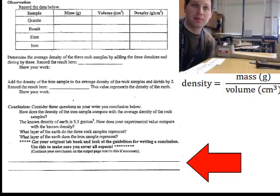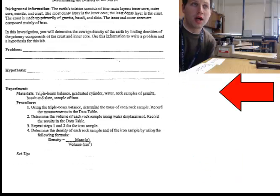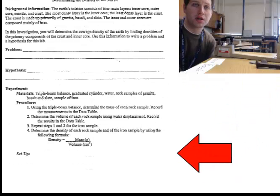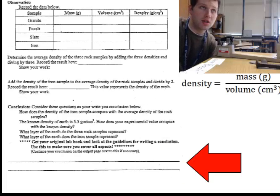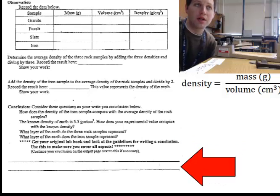You will be rotating through the lab at lab stations. There are only four lab stations, so while you're not working at a lab station, your group will be responsible for writing a problem, writing a hypothesis, and drawing your setup.